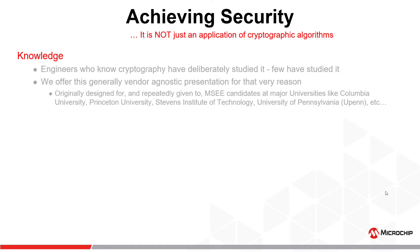How do we achieve security? Well, the first thing we need is knowledge. Typically we use knowledge from prior experiences on our next projects, but not so with cryptography. Cryptography is not something engineers casually pick up along the way. Engineers who are comfortable with cryptography have deliberately studied it, and relatively few engineers are comfortable with cryptography.